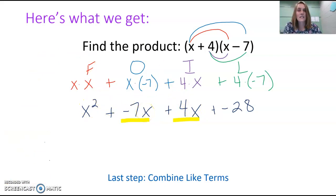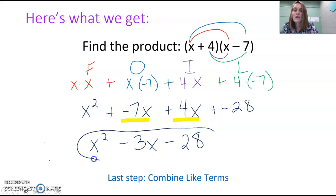x squared and x are not the same variable. If they have different exponents, that means they're not like terms. So x squared is just going to be x squared. Negative 7x plus 4x is negative 3x, and then negative 28 is the only constant. There is our final answer. If we were to FOIL or find the product of those two binomials, we get x squared minus 3x minus 28.